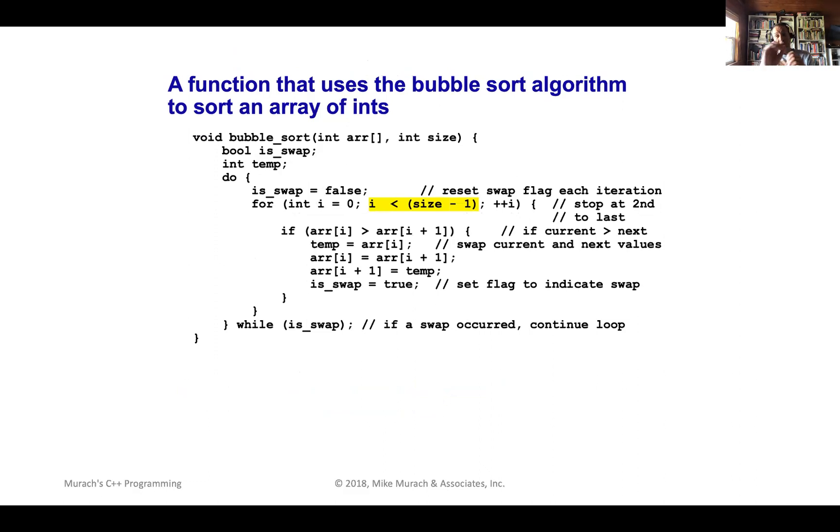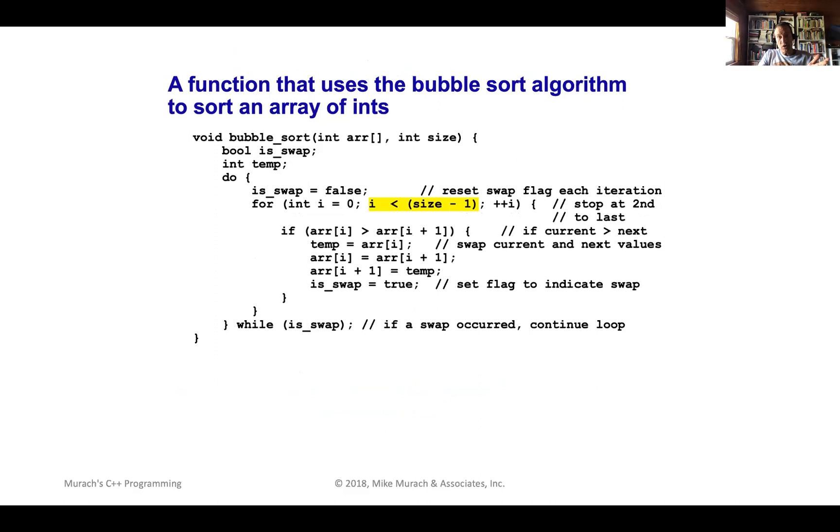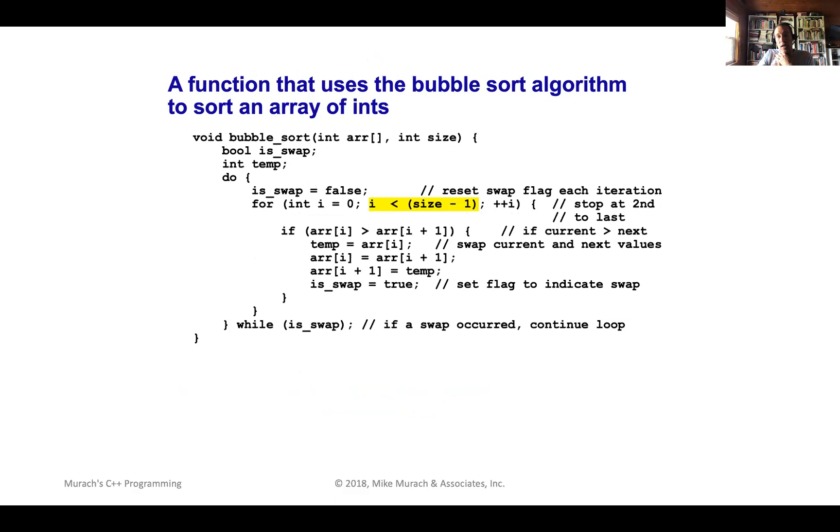Okay, so let's look at a bubble sort algorithm. So here we're sorting. So the previous search algorithm we looked at with a binary search, I mentioned that the caveat was that it needs to be sorted first. So that begs the question, well, how do you sort? Or what's an efficient way to sort things? So I think the book covers two, it covers the bubble sort and the selection sort. I'm just going to cover the bubble sort here, because it's probably a more popular one.